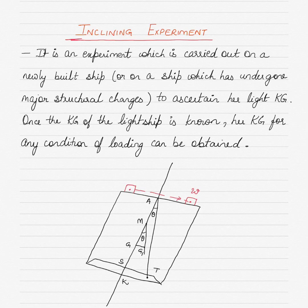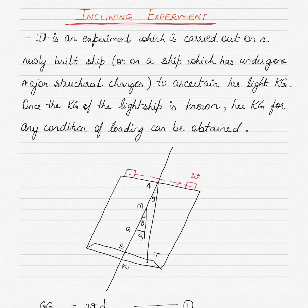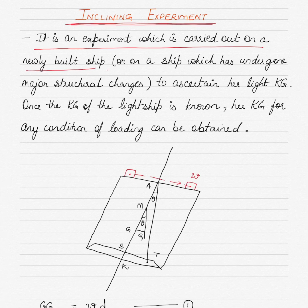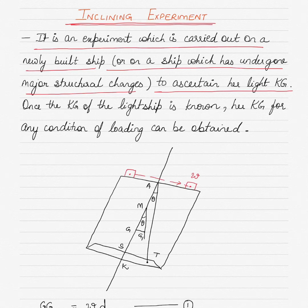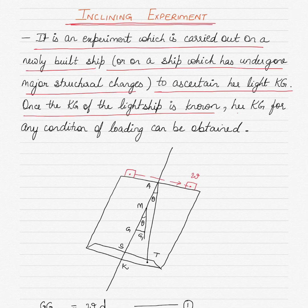The topic for today's video is the inclining experiment, in the area of advanced ship stability. We'll talk about what is an inclining experiment, how it is to be conducted, and what are some of the essential precautions to be observed. The inclining experiment is carried out on a newly built ship or one which has undergone major structural changes to determine her light KG — the distance between the center of gravity and her keel. Once the KG of the light ship is known, her KG for any condition of loading can also be obtained.